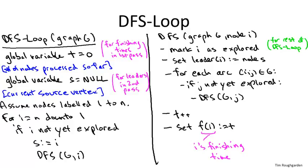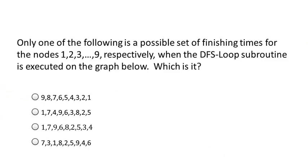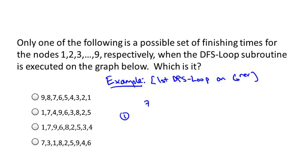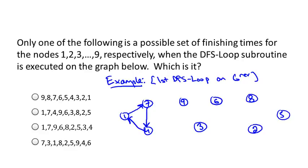Let's make this concrete with a careful example — in fact, it'll be better if you trace through part of the algorithm yourself. I'll draw a nine-node graph. To be clear, let's assume we've already executed step one — we've already reversed the graph. This blue graph is the reversal with arcs already reversed. The nodes are labeled arbitrarily from one to nine, representing their position in the node array. In the DFS loop routine, you process nodes from n down to one.